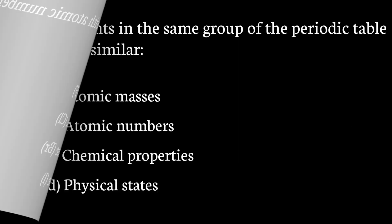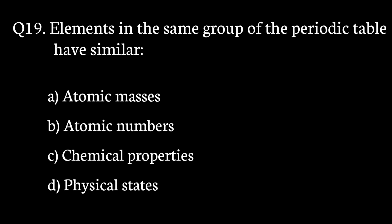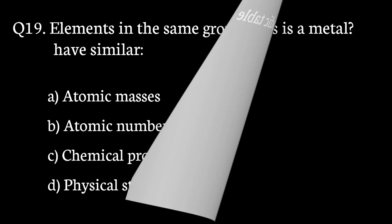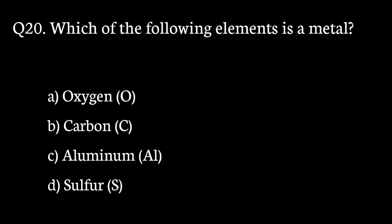Question number 19. Elements in the same group of the periodic table have similar? The correct answer to that question is option C. Chemical properties.